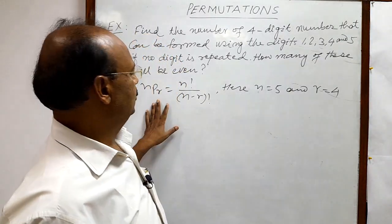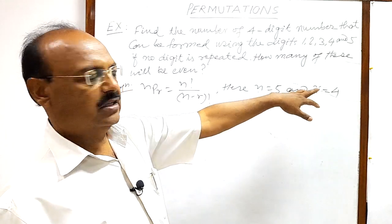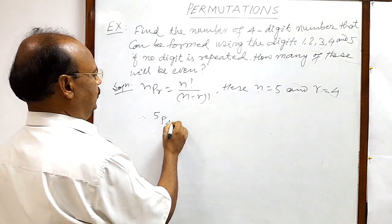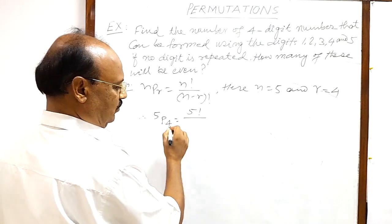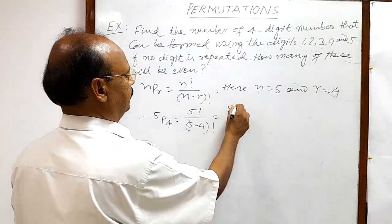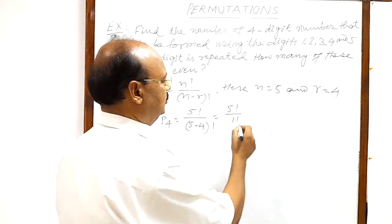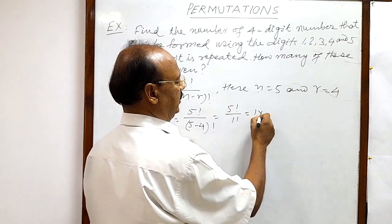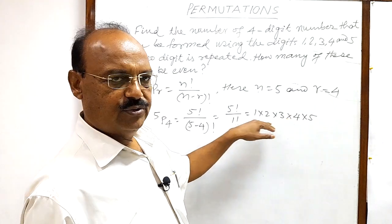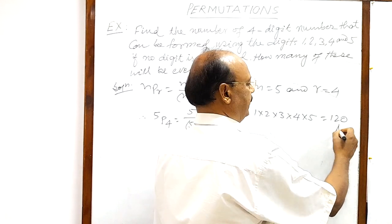Putting n = 5 and r = 4, we get 5P4 = 5! / (5 - 4)! = 5! / 1!. Since 1! = 1, this equals 5! = 1 × 2 × 3 × 4 × 5 = 120.